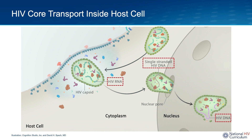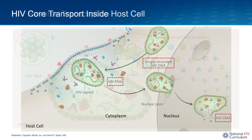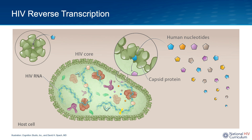During this transport, the capsid shell provides a protective environment for the HIV genomic RNA to be converted to HIV DNA. For HIV RNA to be converted to HIV DNA, the host cell nucleotides must get inside the viral core. As shown in the insets here, the central pore of the HIV capsid hexamer provides a portal for the nucleotides to migrate through the viral capsid shell and into the HIV core.